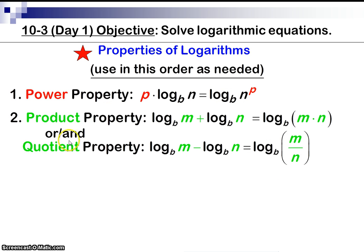The next one is called the product and or quotient property. If we have, you remember how if we multiply two, if we had two bases that were the same and we multiply them, we would add the powers? Well, that's basically what's happening here. If we have two logarithms with the same base and we're adding them together, we could take the insides and multiply them together. Same thing works for the quotient. If we're subtracting them, we can divide.